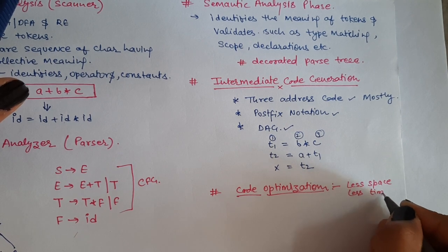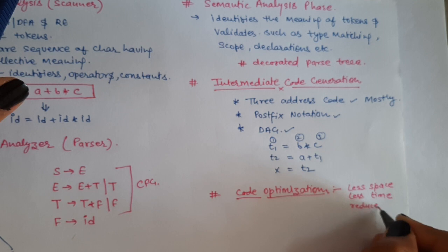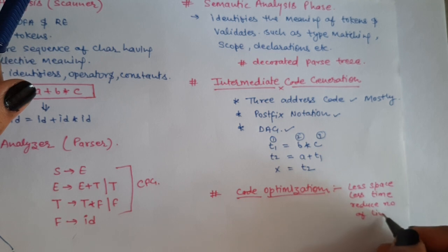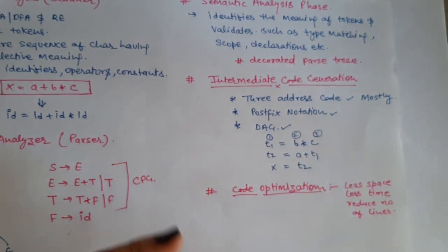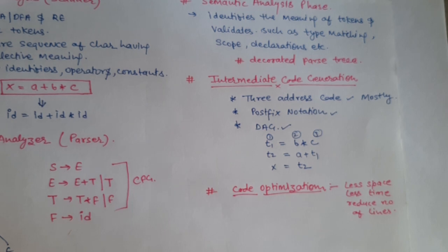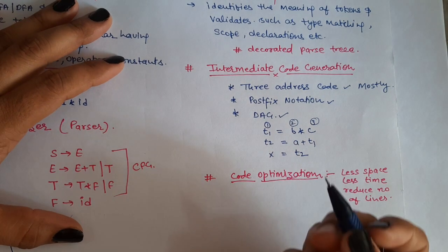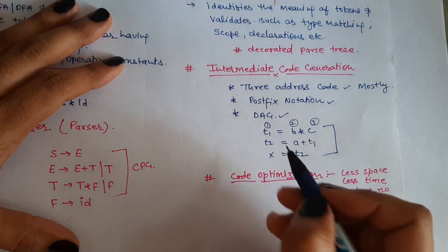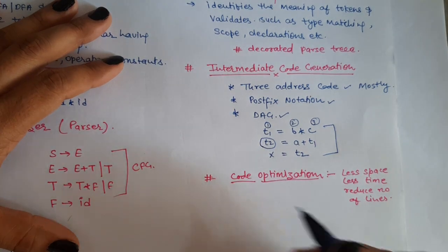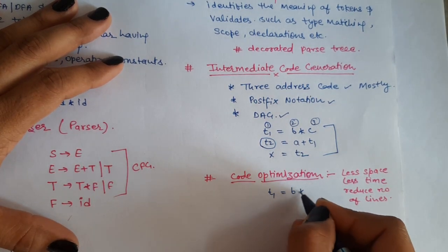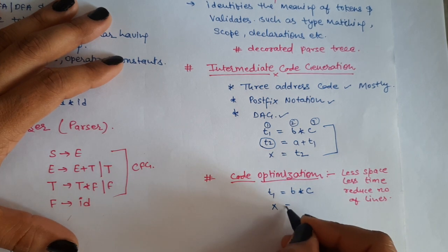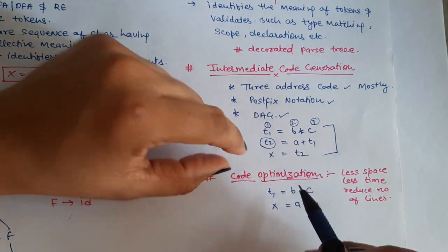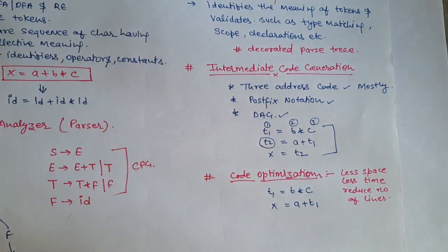We have a lot of code optimization techniques which we will see in detail. Now if we have to optimize our 3-address code, what can we do? We can skip this variable t2. Like t1 is equal to b star c and x is equal to a plus t1. What did we do? Remove t2 and save the result of a plus t1 memory location in x. Now this optimized code is given to the code generation phase.